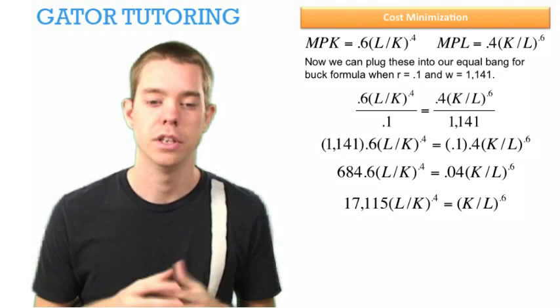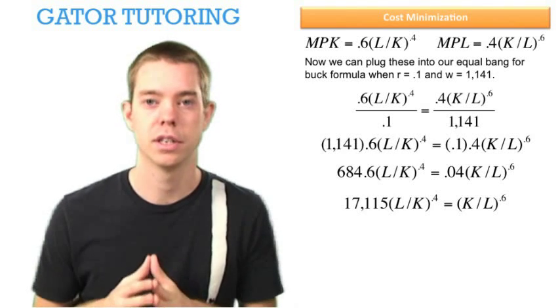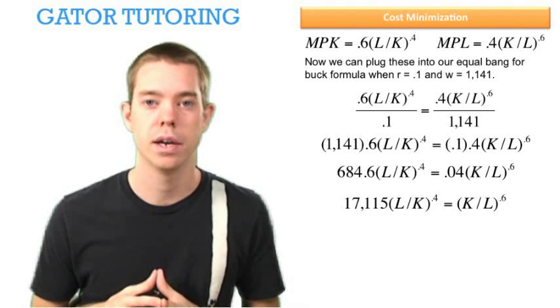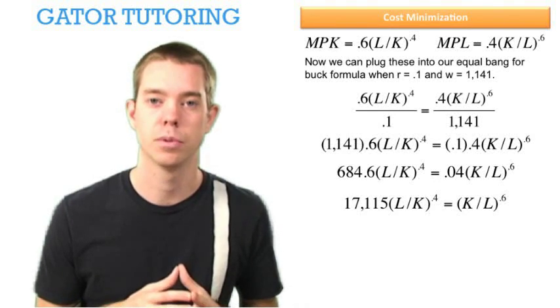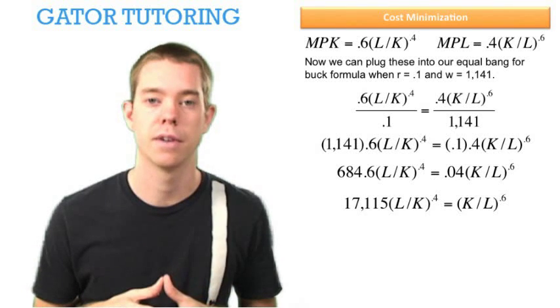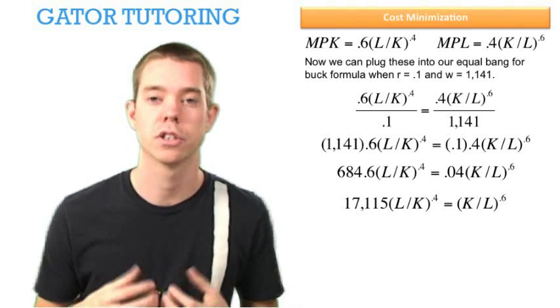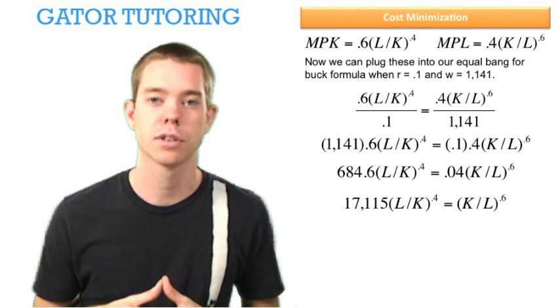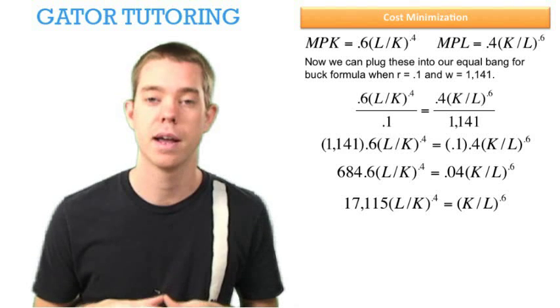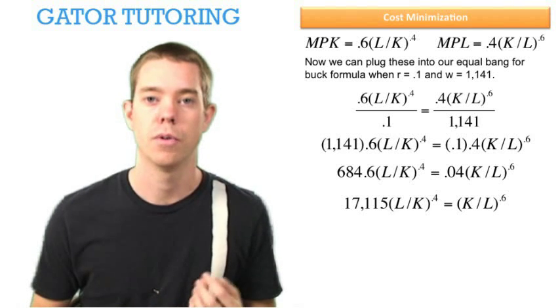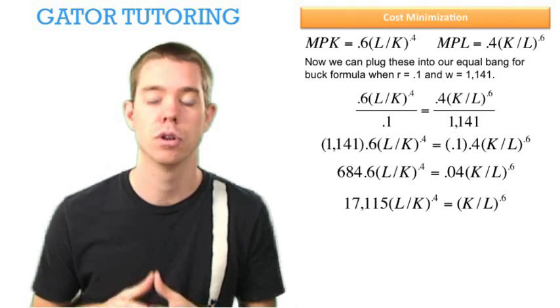We have fractions on each side raised to exponents. The simplest way to handle this is to cancel out our variables on one side. On the left, we have (L/K)^0.4. To cancel that, we multiply by the reciprocal, (K/L)^0.4. If we do something to one side of the equation, we must do it to both sides.